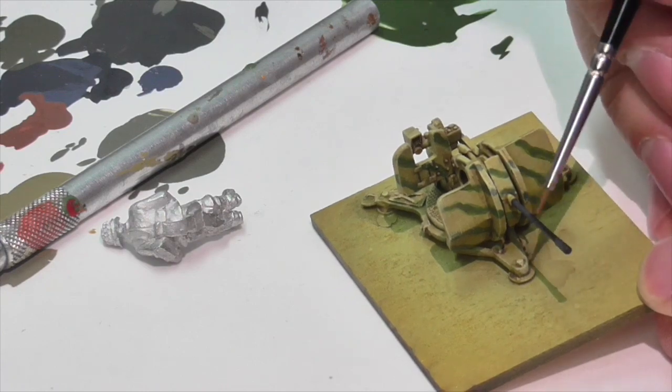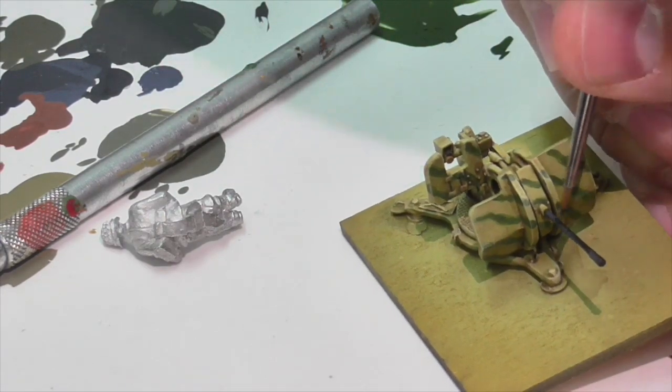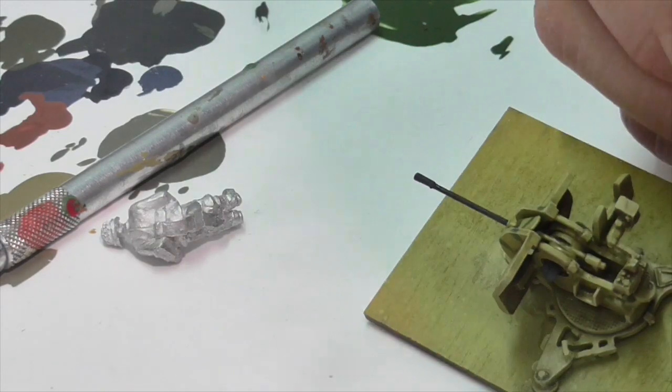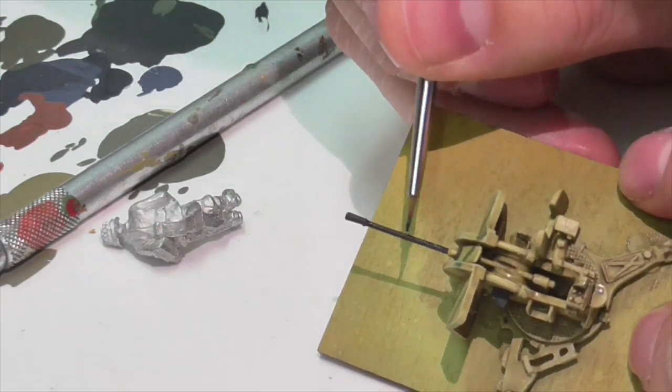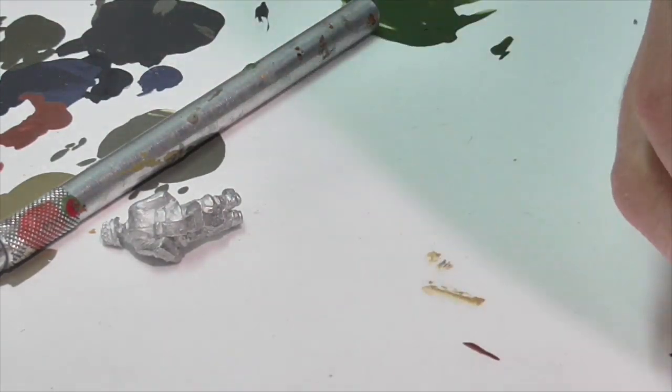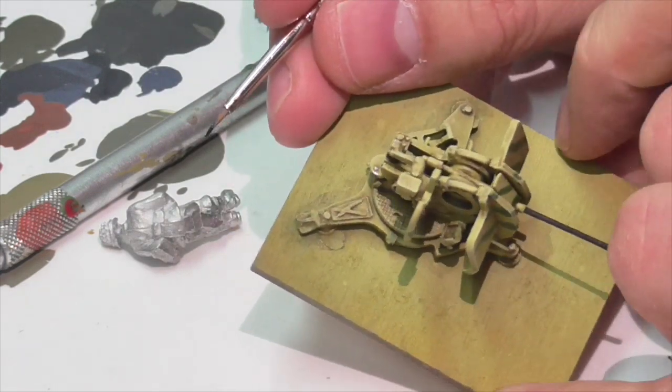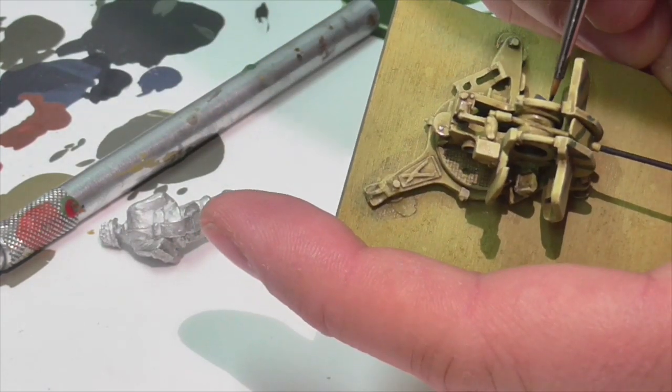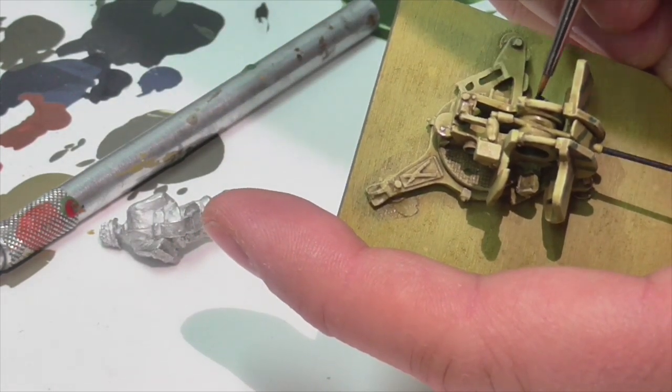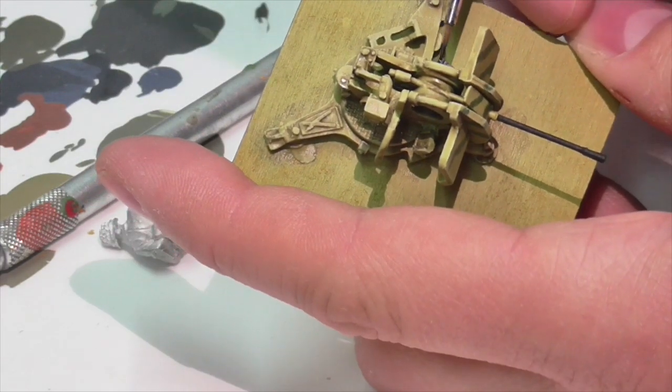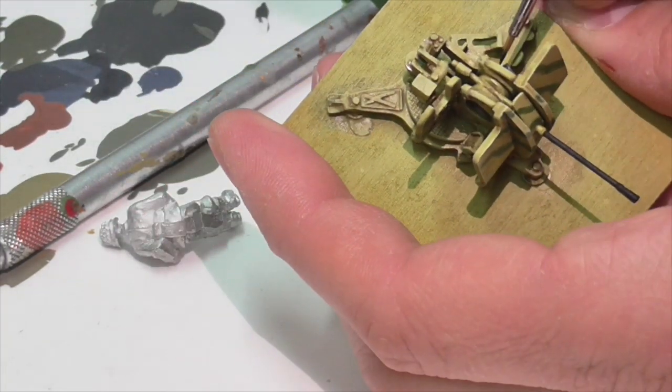Now Jasper's going to continue highlighting some of the metal areas. He's taken some Blair gun metal here and he's mixed in some black just to get it a darker metallic shade. And he's going to use that to highlight the gun barrel here a little bit, get a little bit of that metallic shine, and also the cartridge box. And that's really going to be his first highlight and it's going to be pretty subtle.